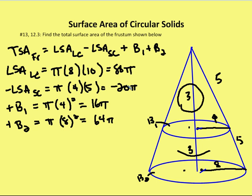And I'm left with 80 minus 20π is 60π, plus another 80π. That leaves me with 140π units squared for the area of this frustum in question.